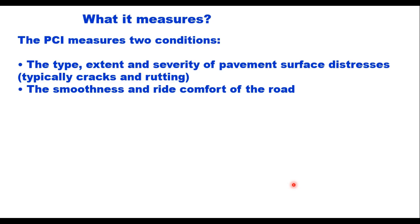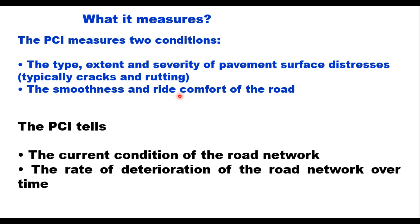PCI measures two conditions of the road: the type, extent, and severity of pavement surface distresses — PCI generally considers cracks and rutting as the primary surface distresses — and the smoothness and ride comfort of the road, considered in terms of road roughness either in RI or IRI. If measured regularly at certain time intervals, PCI can also indicate the rate of deterioration of the road network over time.